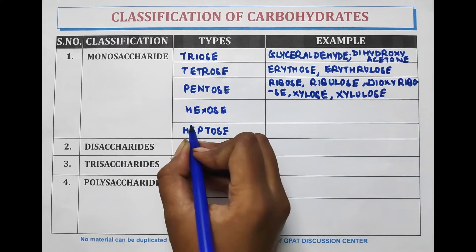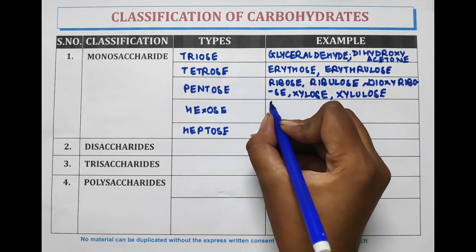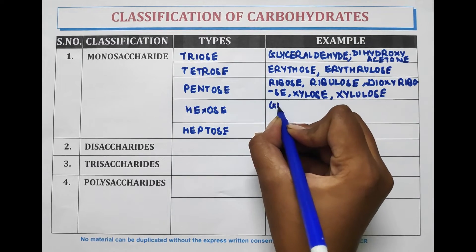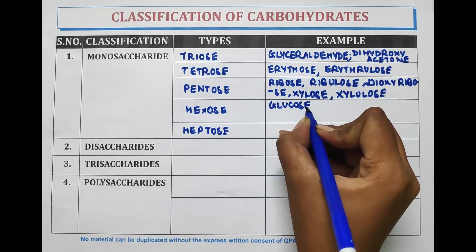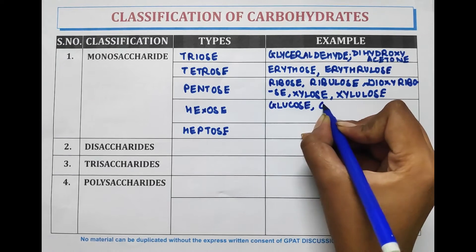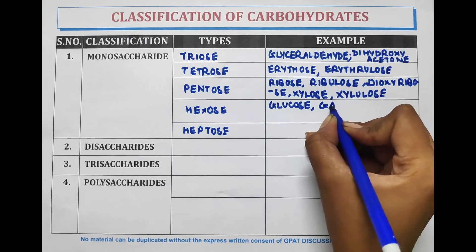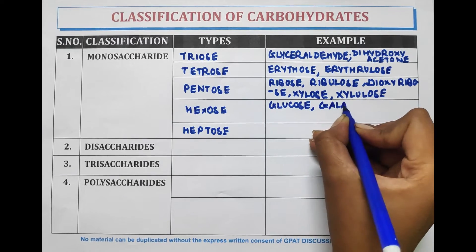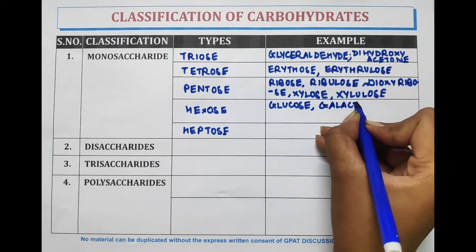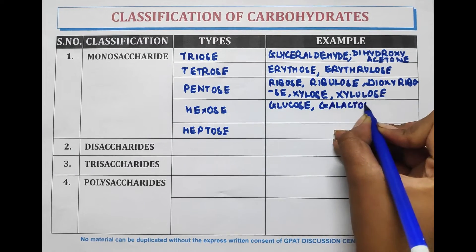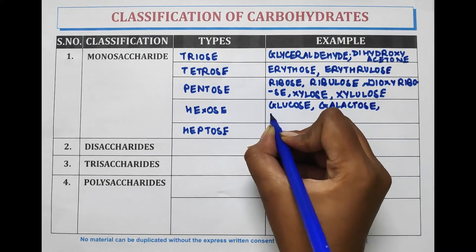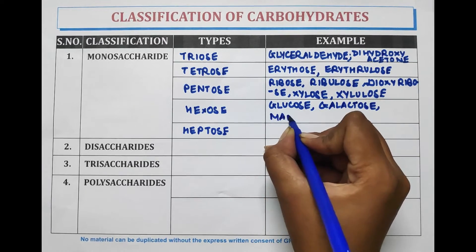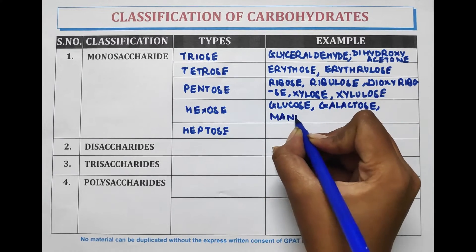Examples of hexose are glucose, galactose, mannose, and fructose.